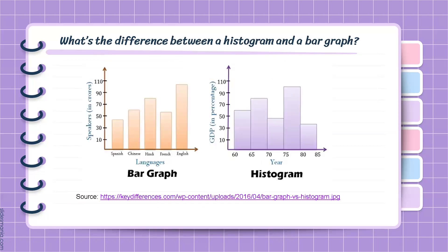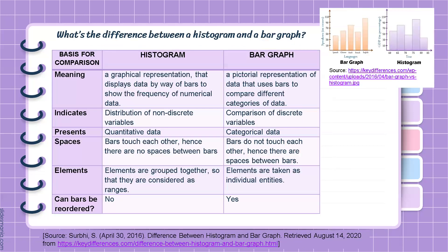So what's the difference between a histogram and a bar graph? Histogram is a graphical representation that displays data by way of bars to show the frequency of numerical data. Bar graph, on the other hand, is a pictorial representation of data that uses bars to compare different categories of data.